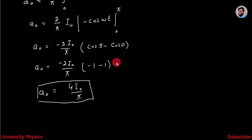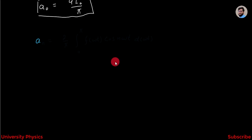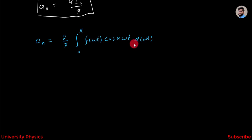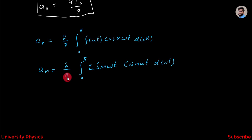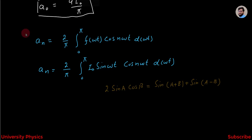Now we have to find the value of aₙ. We know that aₙ = (2/π) integration from 0 to π of f(ωt) cos(nωt) d(ωt). Putting the value of f(ωt), aₙ = (2I₀/π) integration from 0 to π of sin(ωt) cos(nωt) d(ωt). Now I have to apply the trigonometric relation: sin A cos B = (1/2)[sin(A+B) + sin(A-B)].